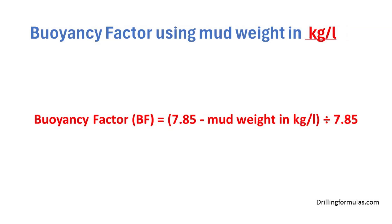Buoyancy factor formula using mud weight in kilogram per liter: buoyancy factor is equal to 7.85 minus mud weight in kilogram per liter, divided by 7.85.